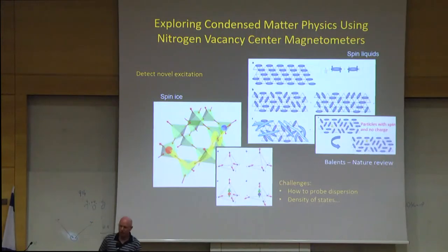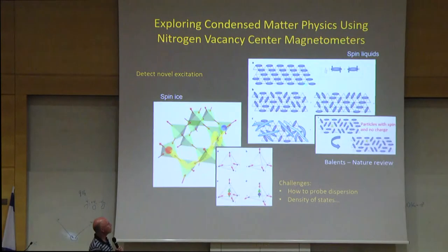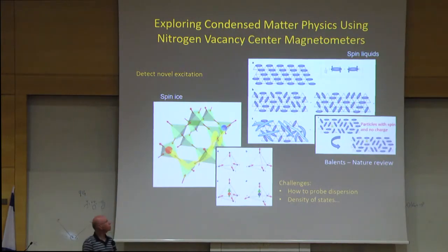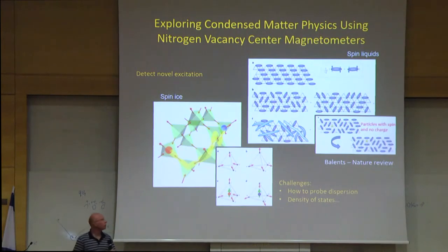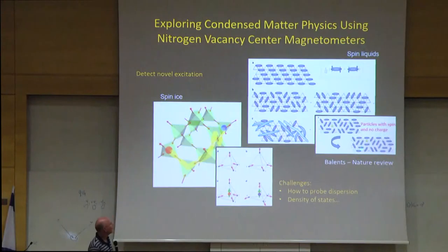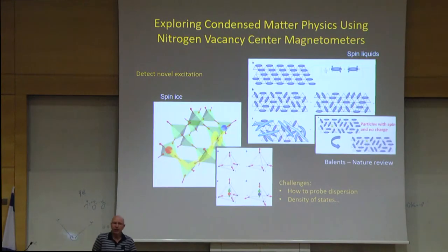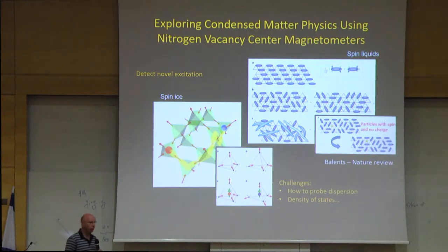Another example is spin liquids. These are materials believed to exist where the ground state wants to form a magnetic state with nearby electrons arranged in singlet configurations. But the system actually wants to form all possible superpositions of singlets. Overall it doesn't order magnetically and is gapped for charge excitations. Yet when there are defects, people believe there are spin excitations in the absence of any charge — pure spin excitations with no charge, behaving as fermions in the context of heat flow.